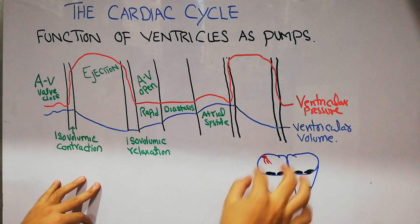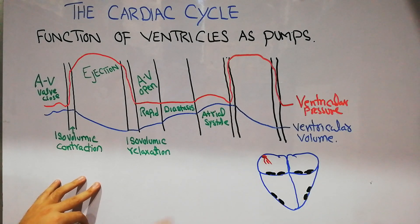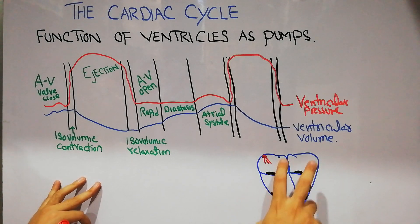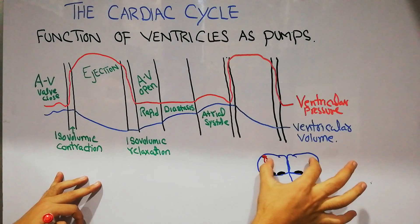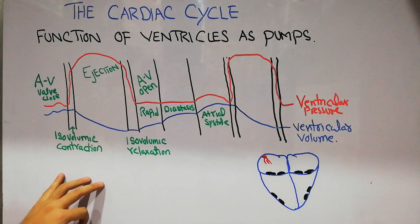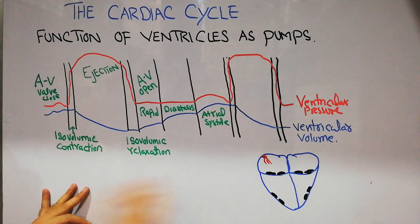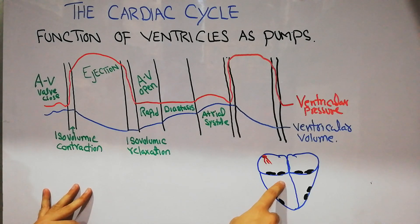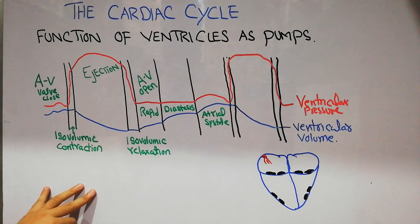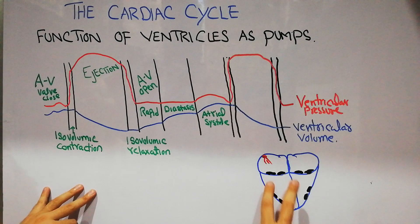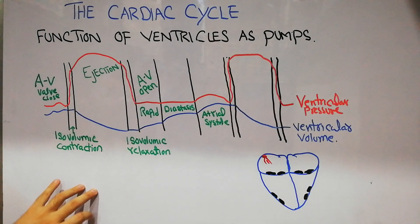We discussed in ECG that the pumping process of the heart starts with excitation from the SA node. The SA node initially excites the atria, the atria contracts, blood from the atria goes into the ventricles, and then the ventricles contract. The blood goes from the right ventricle into the lungs and from the left ventricle into the rest of the human body.